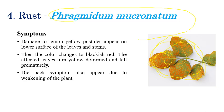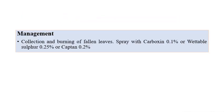Dieback symptoms or orange color rust pustules appear on the lower surface. The same symptoms can also be observed on stems in later stages, and the plant becomes very weak and dies. Management: collection and burning of fallen leaves, and spraying of Carbendazim 0.1%, wettable sulfur 0.25%, or Captan — any one of these at the desired concentration for three applications — can efficiently control this disease.